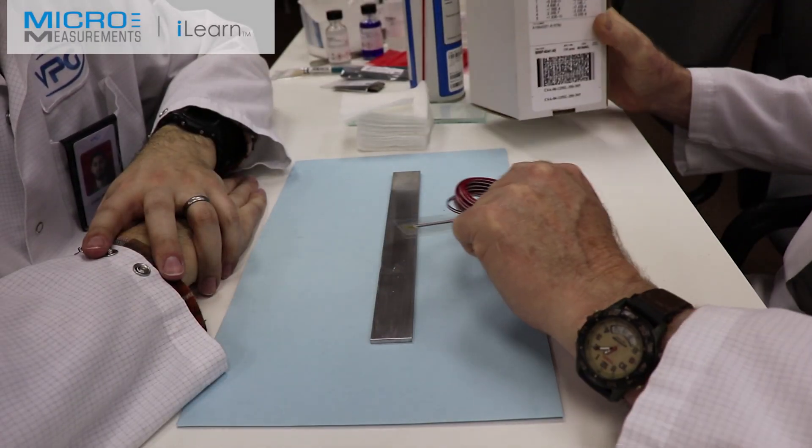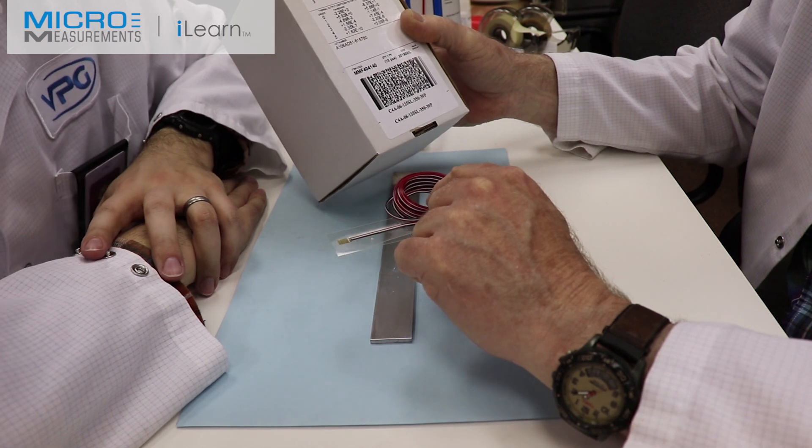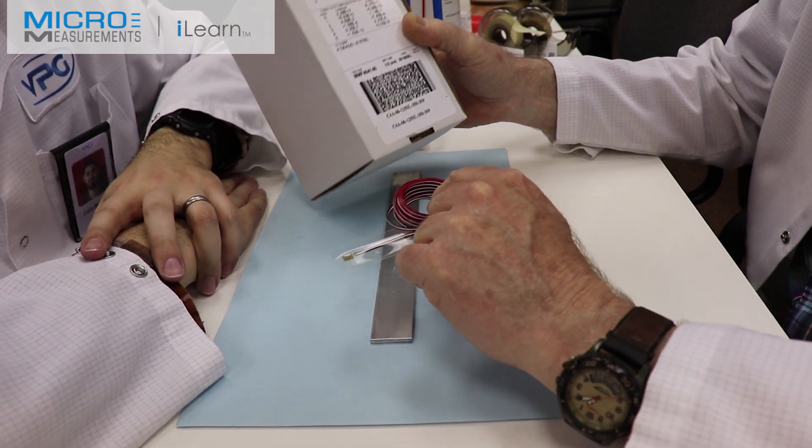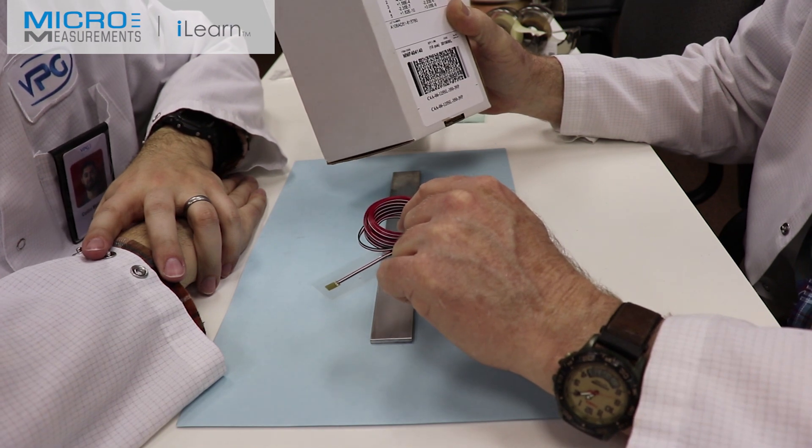Hey Colin, guess what I got here? The brand new C4A series strain gauge with advanced sensor technology. It's the 125SL. And today I'd like to help you understand how to bond this gauge properly.